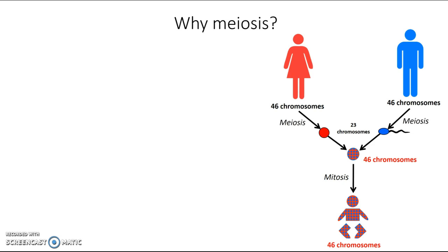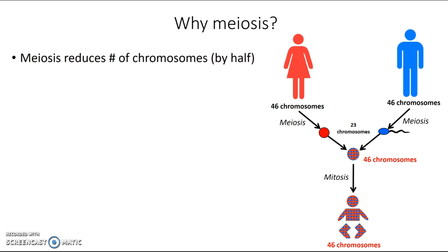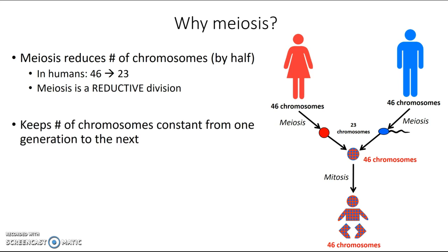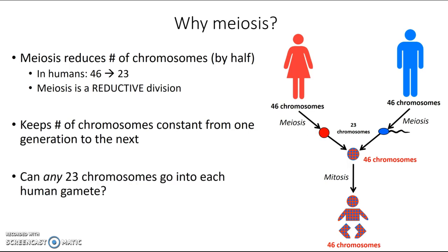This is what meiosis does — it reduces the number of chromosomes by half during gamete production. In humans, this means going from 46 chromosomes in the parent to 23 chromosomes in the gamete. For this reason, we call meiosis a reductive division. This keeps the chromosome number constant in a species from one generation to the next. But could it be just any 23 of a parent's chromosomes going into each gamete? The answer is no — and to understand why, we need to learn more about chromosomes.